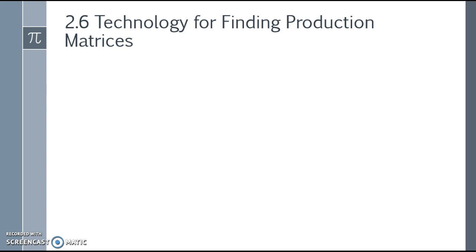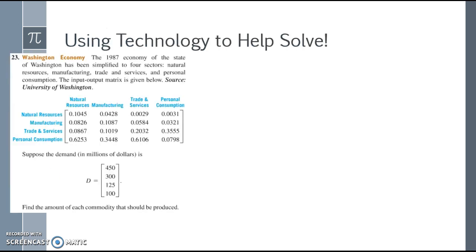I'm going to look at example number 23 from our textbook. It states that the 1987 economy of the state of Washington has been simplified into four sectors: natural resources, manufacturing, trade and services, and personal consumption.